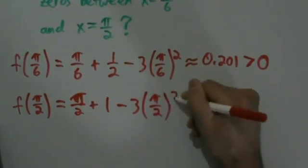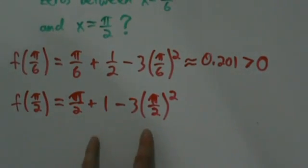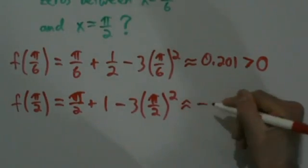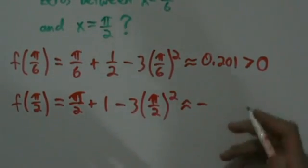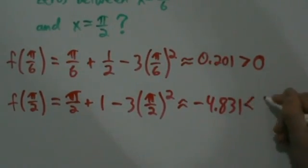Again, it's not really obvious whether that's positive or negative, but we can toss it into a calculator and we'll see that it's approximately -4.831, which is less than 0.